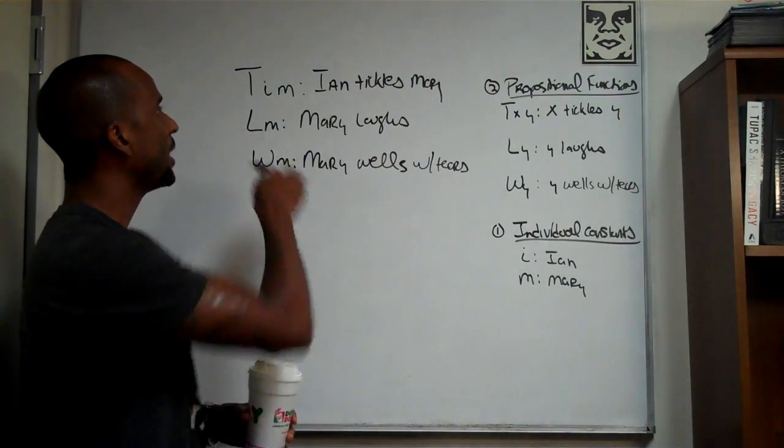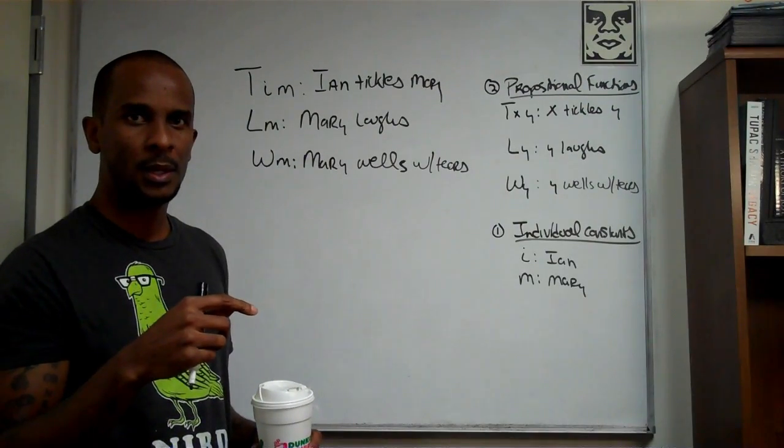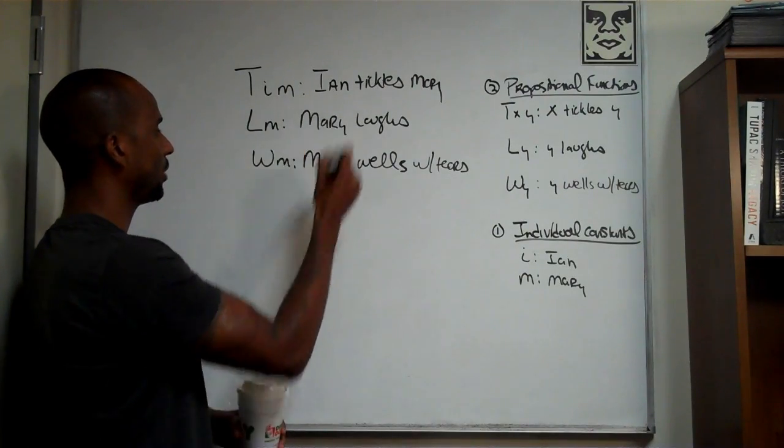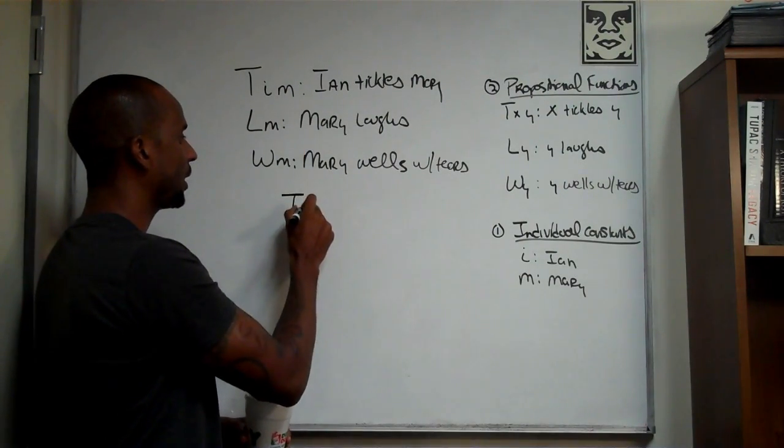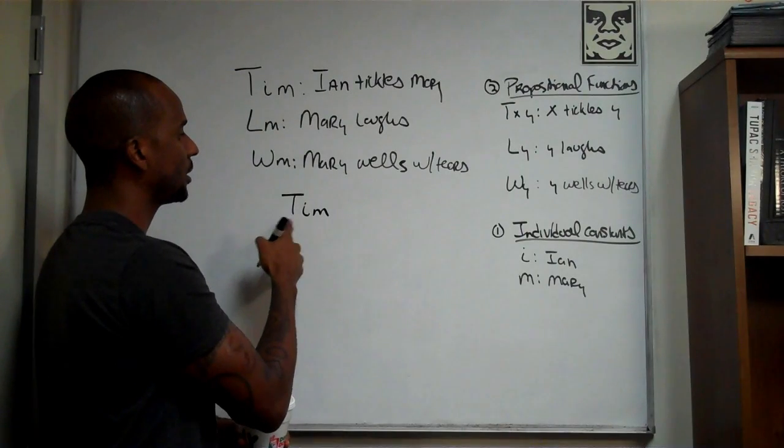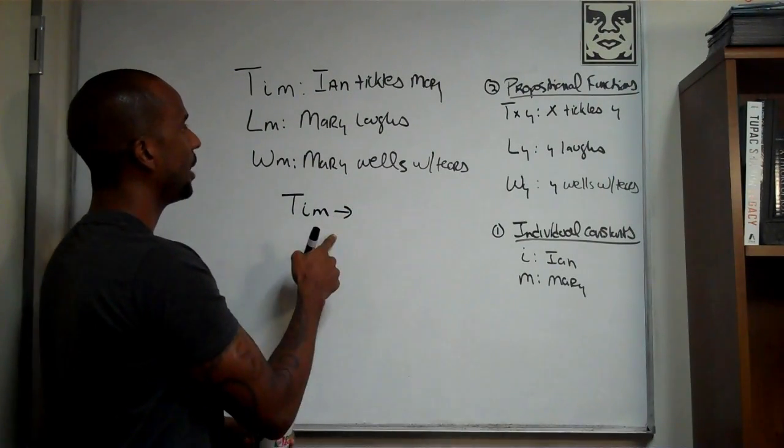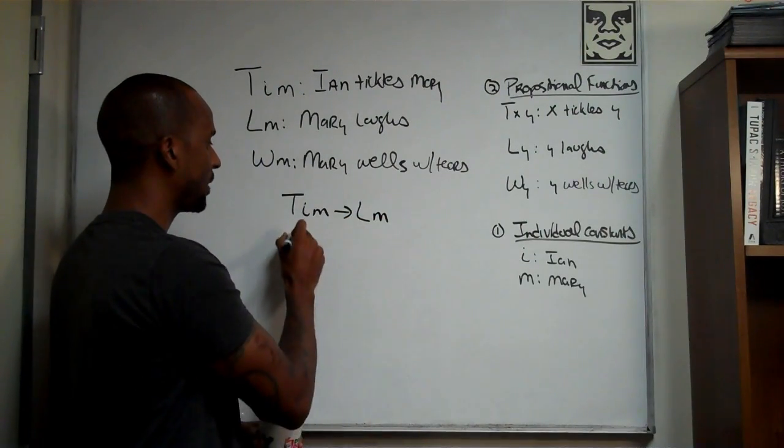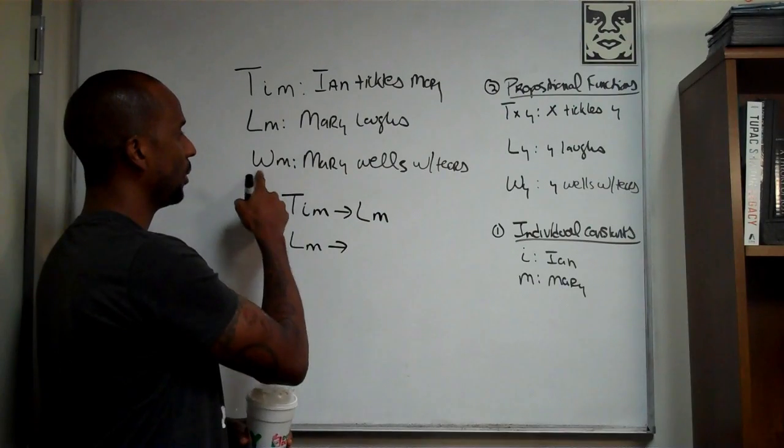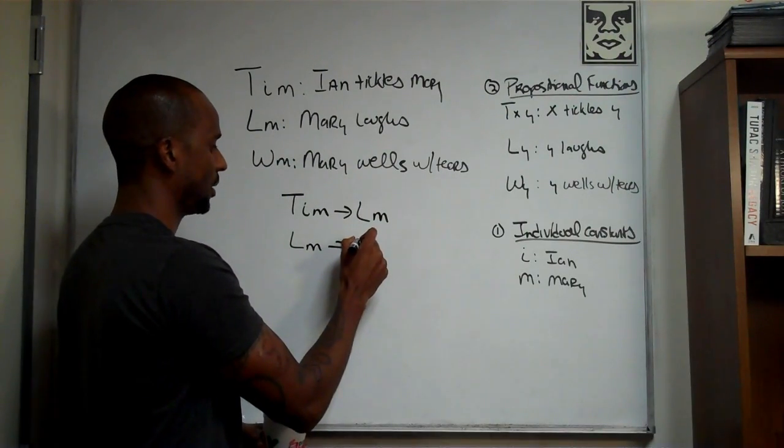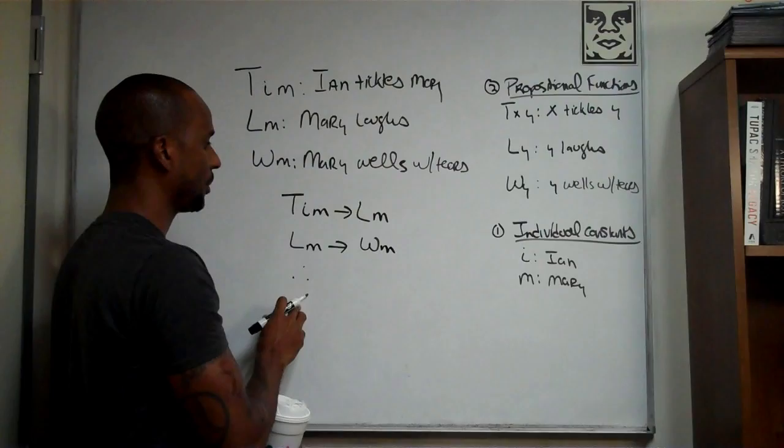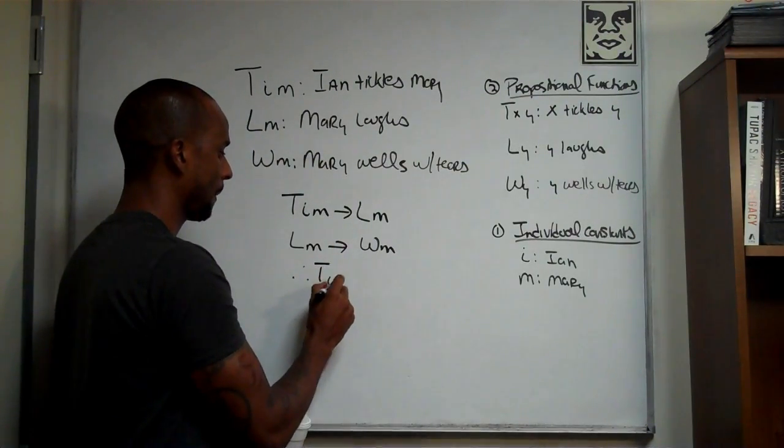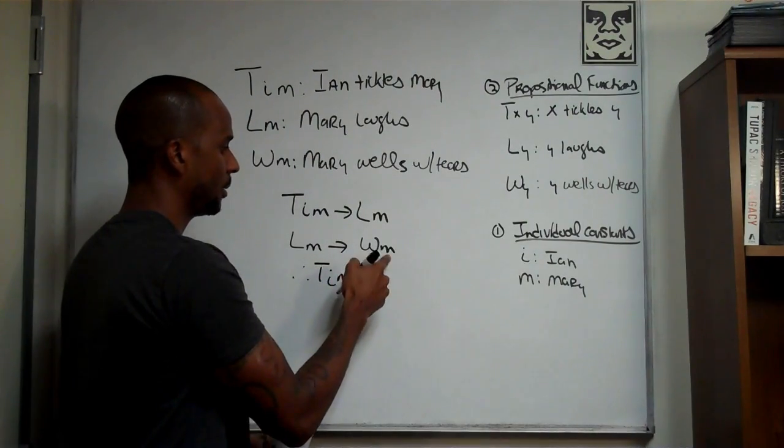If we... I mean, obviously, you can create a pretty simple hypothetical from this, a syllogism. You can create the following. You can say, if it's the case that Ian tickles Mary, then it might be the case that Mary laughs. And then you can say, if it's the case that Mary laughs, then it might be the case that Mary wells up with tears. This is pretty basic stuff. Therefore, you should be able to say, relationally, that if Ian tickles Mary, then Mary will well up with tears.